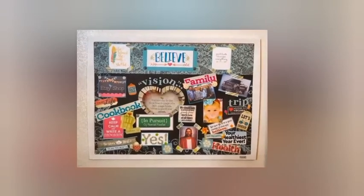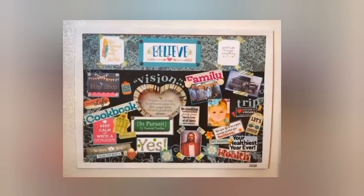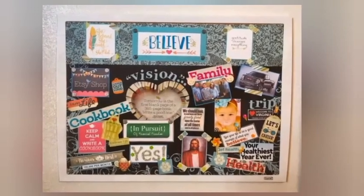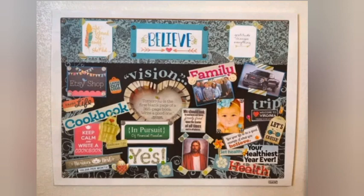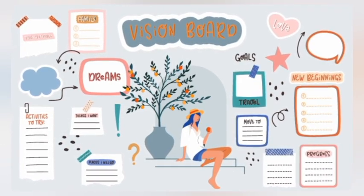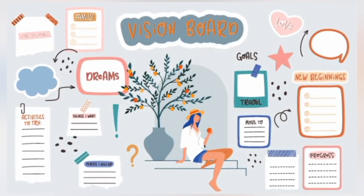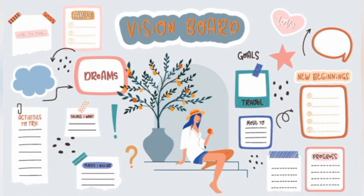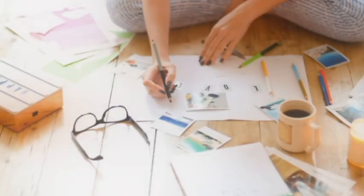Welcome to Easy English. Today I'm going to tell you how to make a vision board. What is a vision board? A vision board is a collection of pictures, magazine clippings, words, and quotes that visually affirm your goals in life. By creating a visual representation of your dreams and putting it somewhere you can see every day, you make it easier to remember your goals and prioritize your actions accordingly.